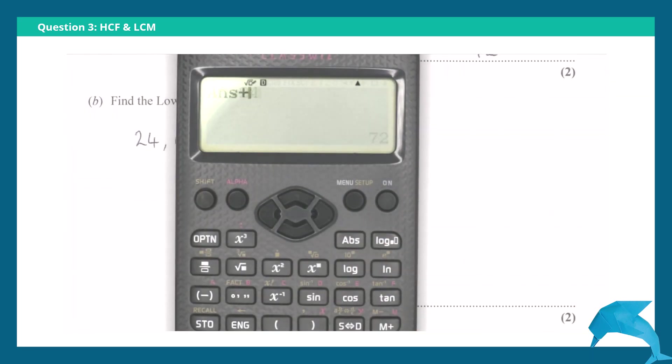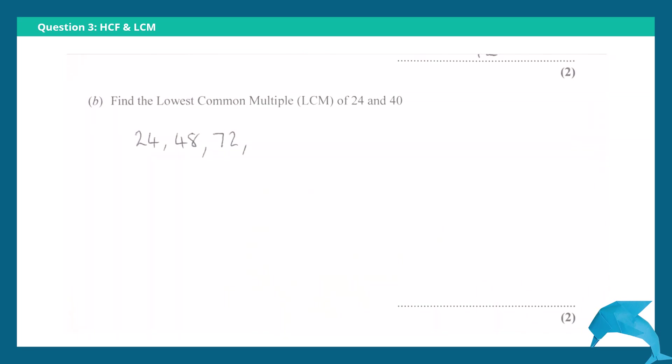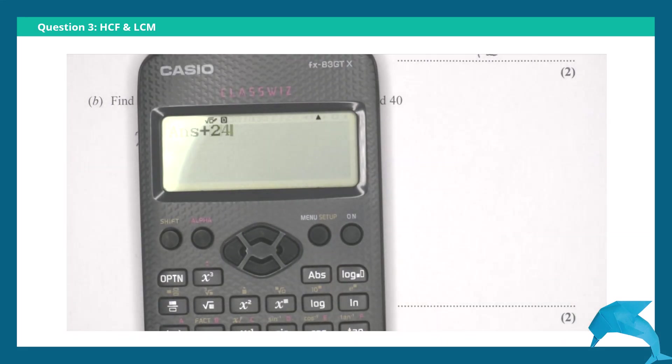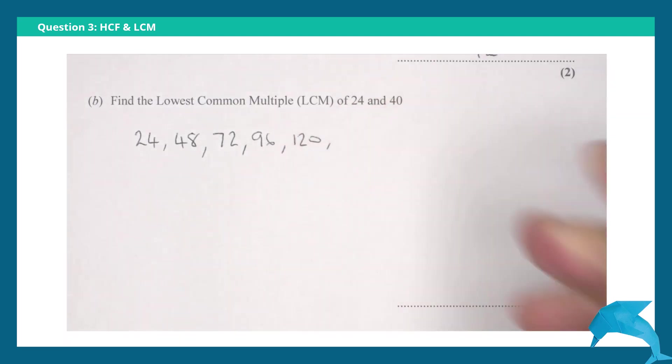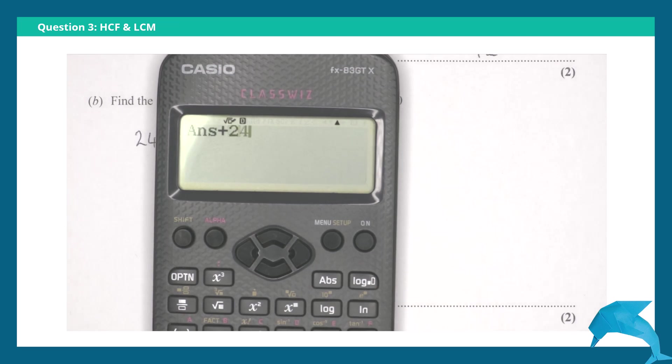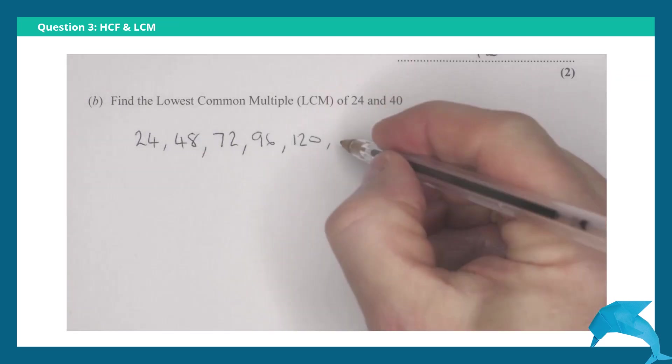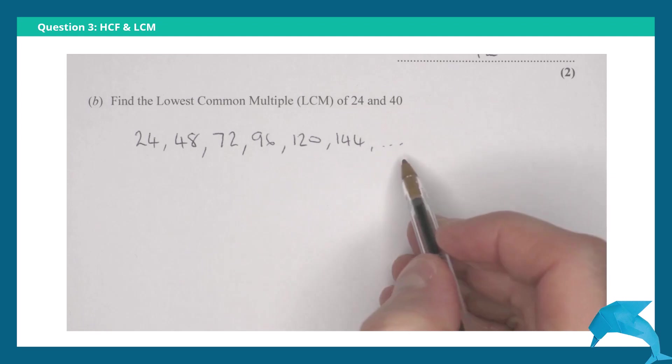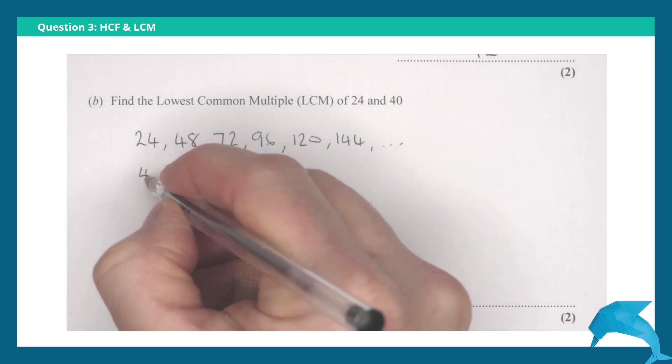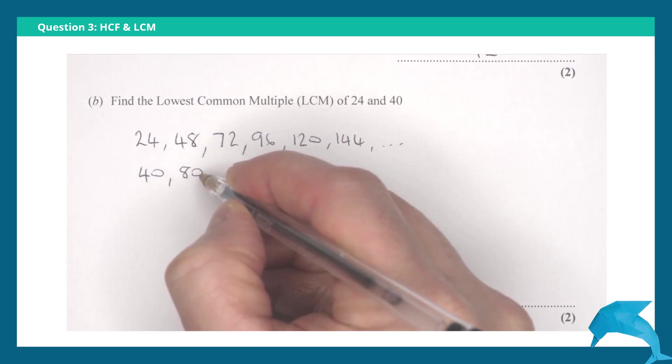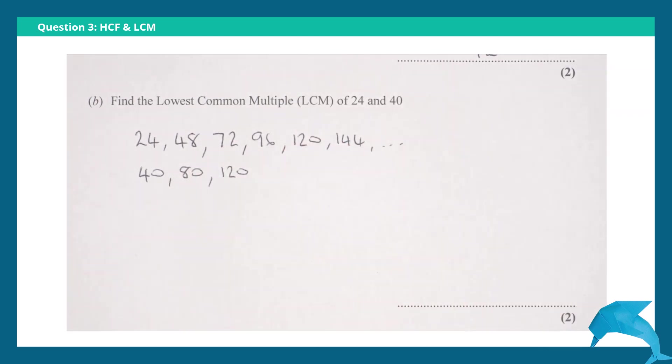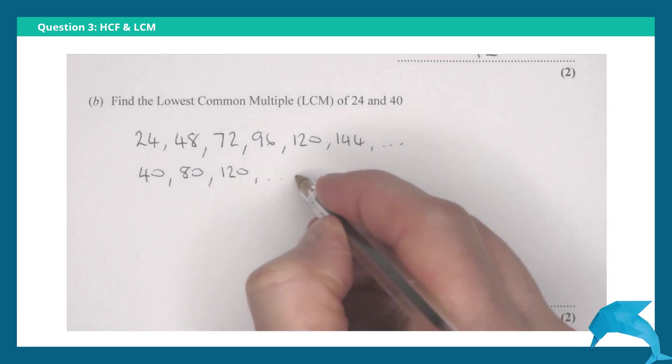Plus 24 is 120, plus 24 is 144. Now we can come back and add more to this list in a second. 40, 80, adding up in 40s, 120. The lowest common value in both of these lists...